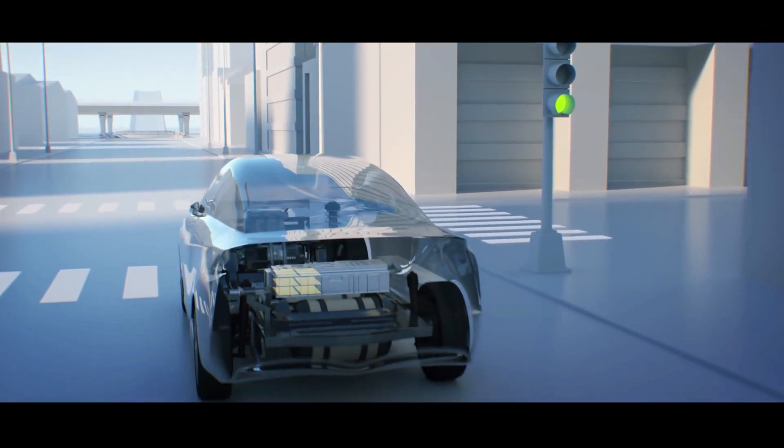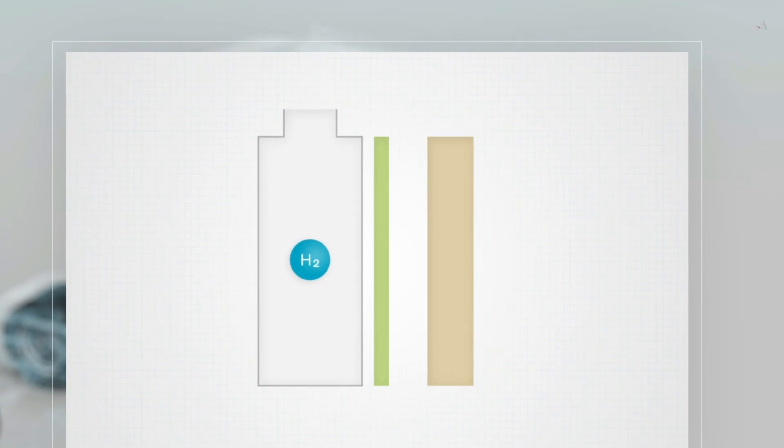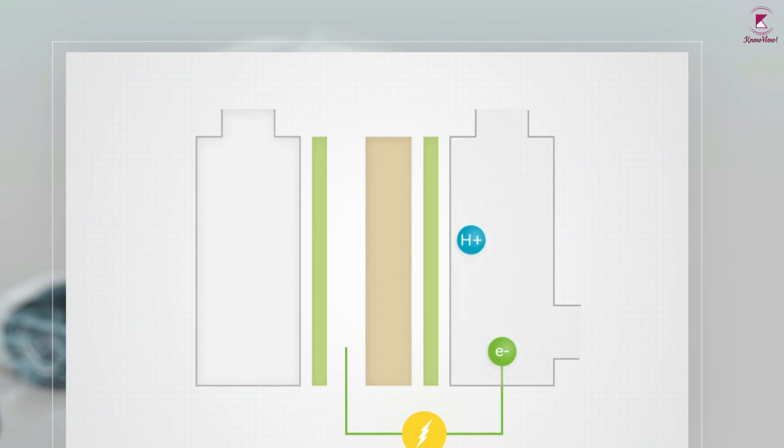The construction of the fuel cell is similar to a battery. Hydrogen enters the anode, where it comes in contact with a catalyst that promotes the separation of hydrogen atoms into an electron and proton. The electrons are gathered by the conductive current collector, which is connected to the car's high-voltage circuitry, feeding the onboard battery and/or the motors that turn the wheels.